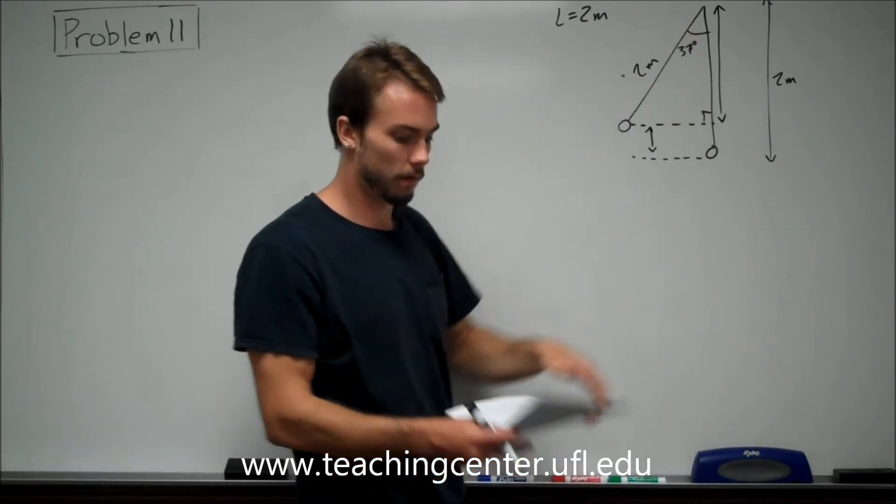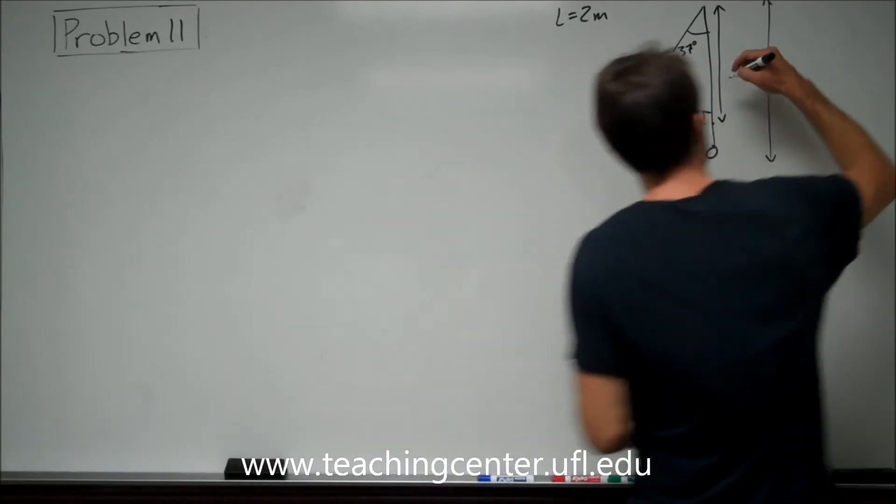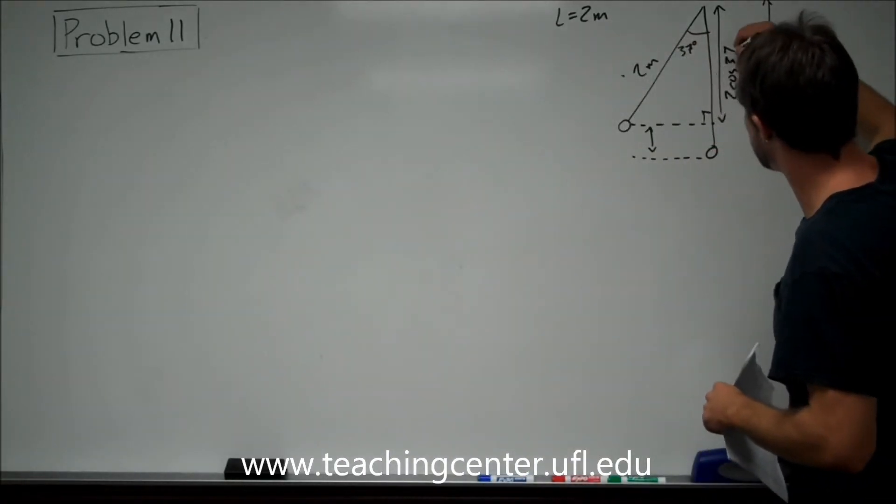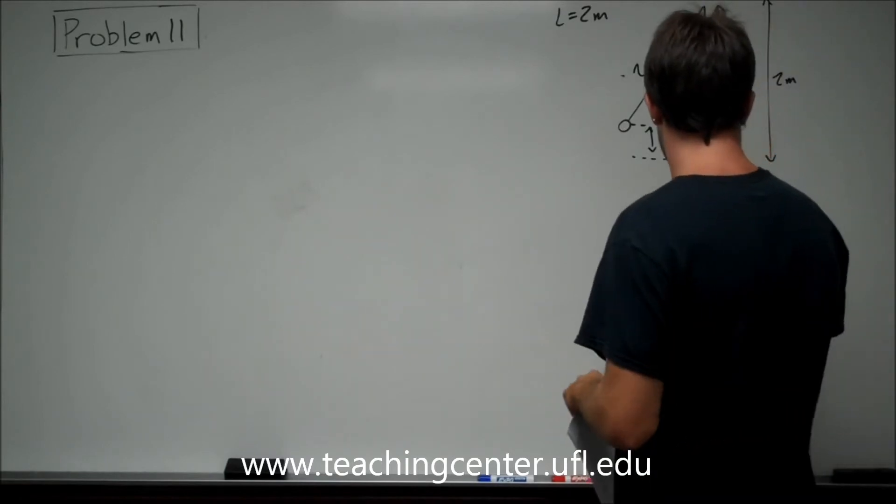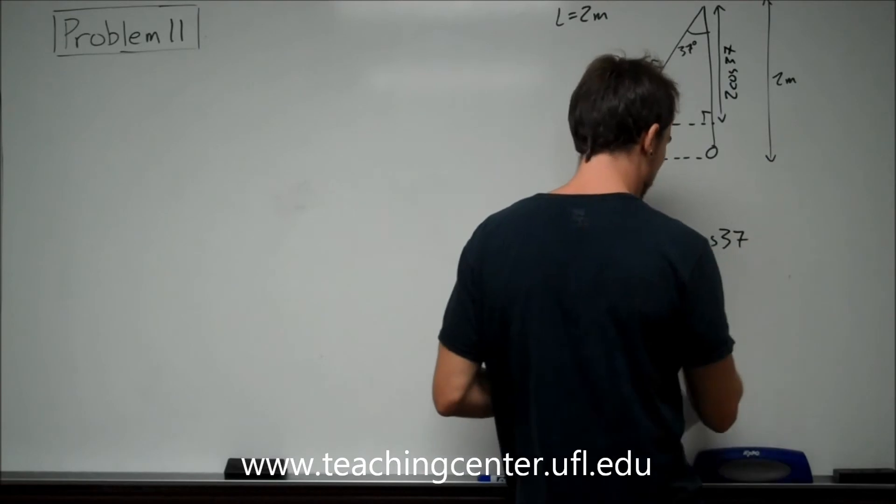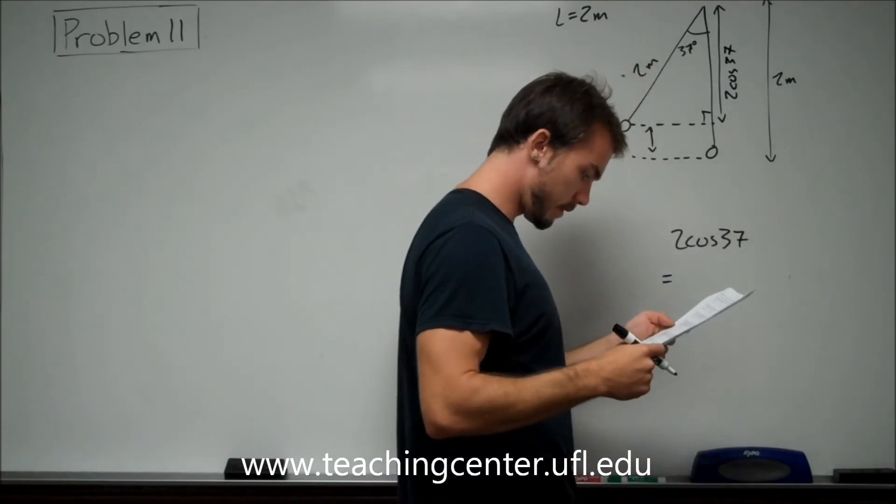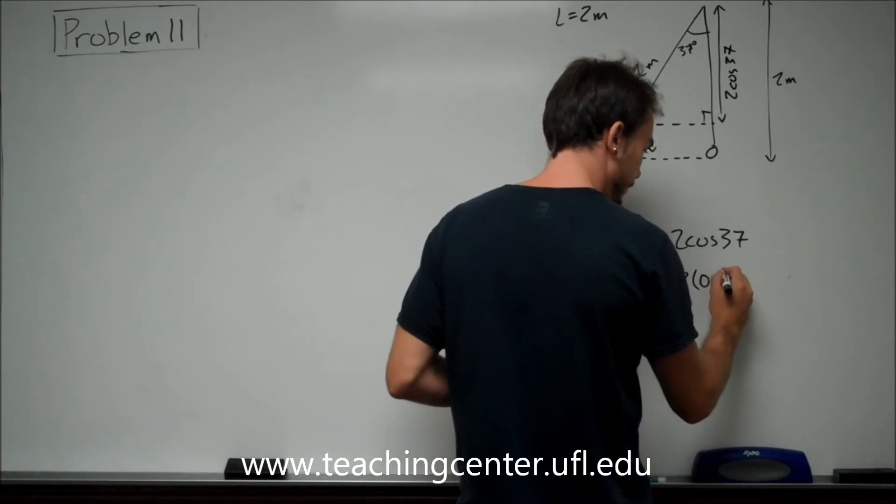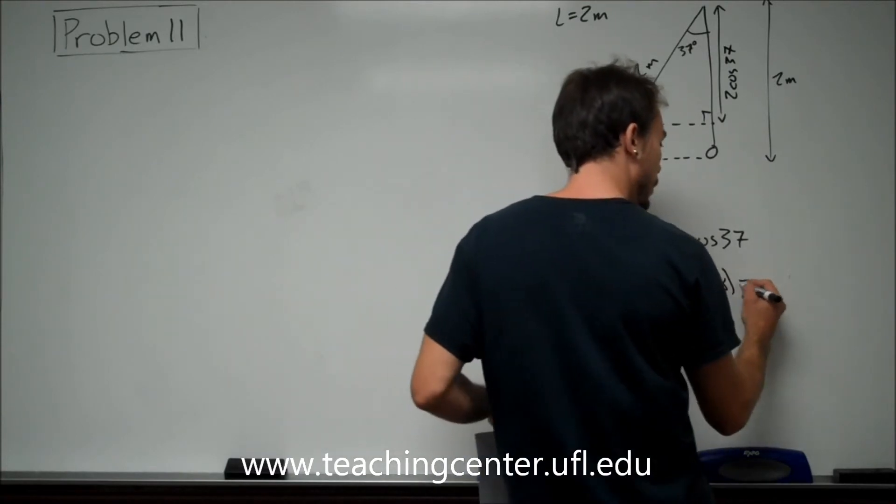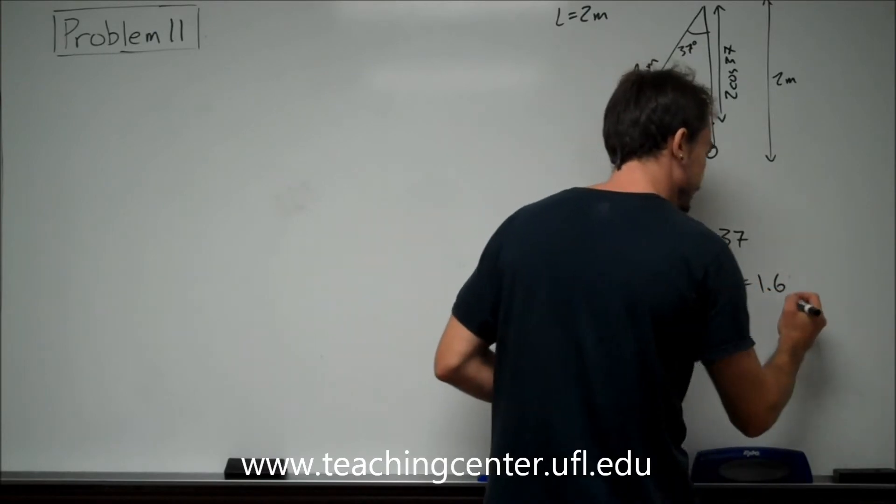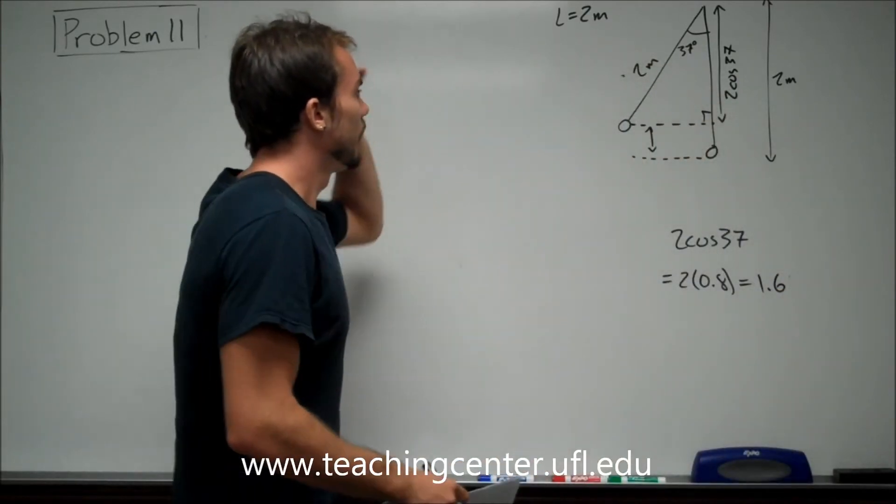So, this is just going to be 2 meters times cosine of 37. Hopefully you guys can do that at this point in time, adding your final. So we know 2 cosine of 37 is going to be that, which they told us specifically that we want to write 2 cosine of 37 as 2 times 0.8, which should just be 1.6.